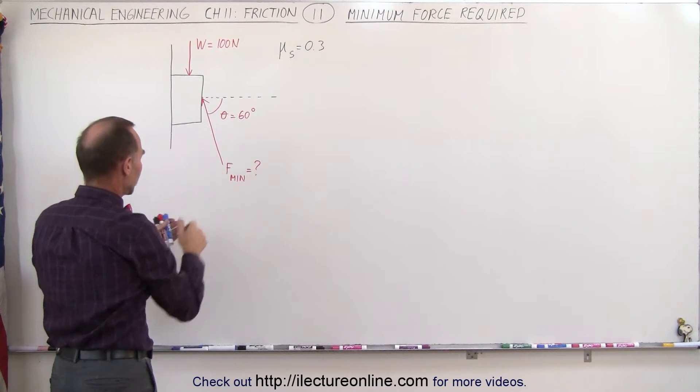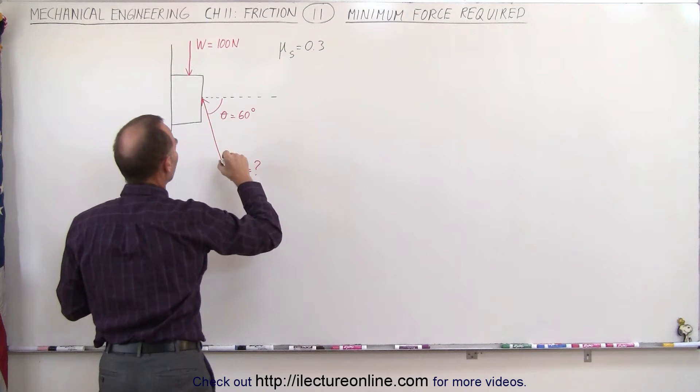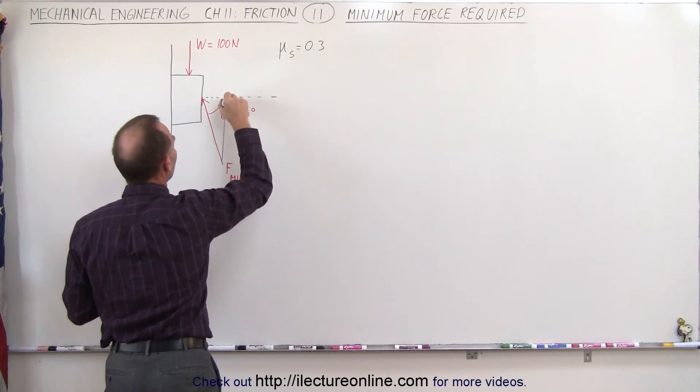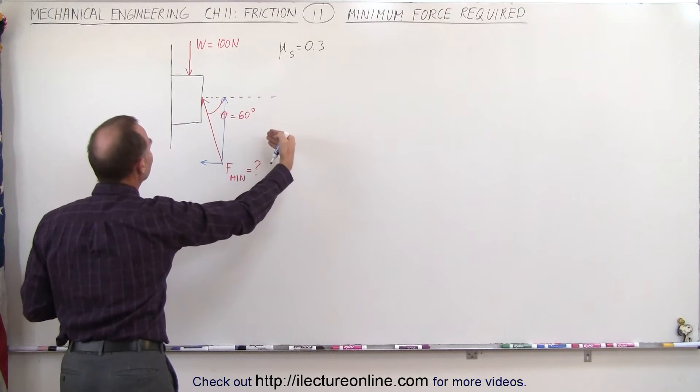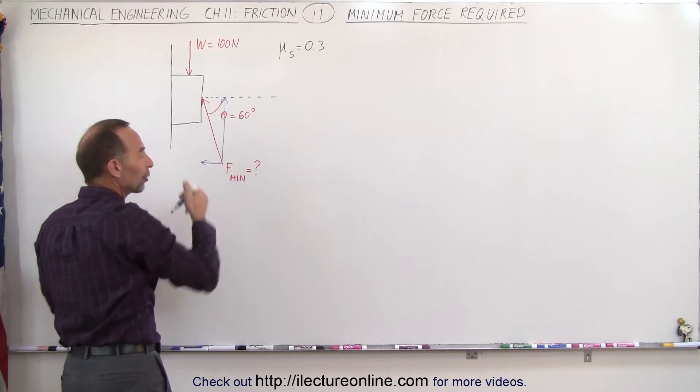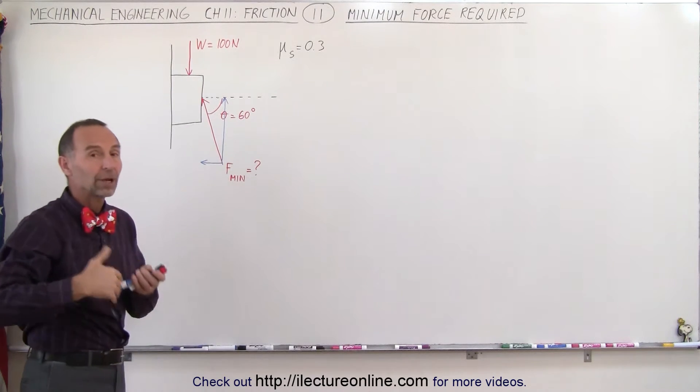Well, this force applied here has two components: a vertical component and a horizontal component. Now the horizontal component will push the block into the wall, therefore creating friction. Assuming that without friction the block would slide downward...